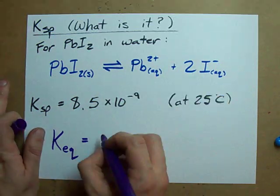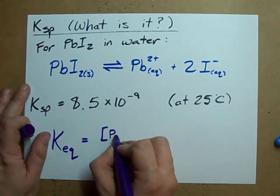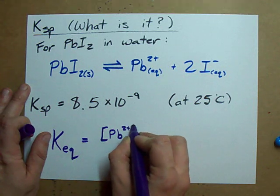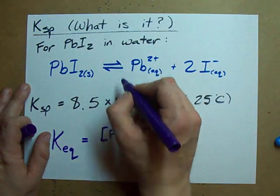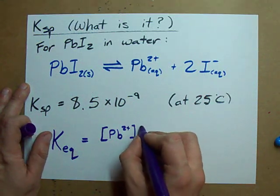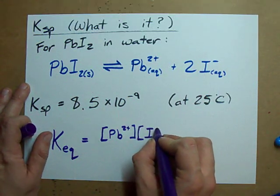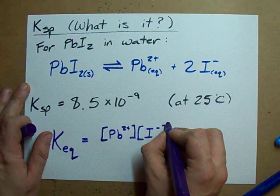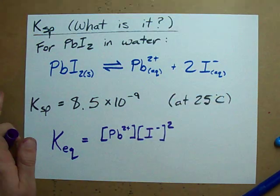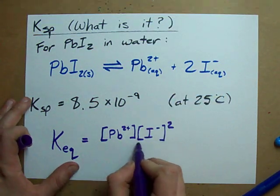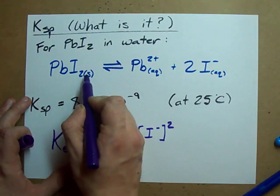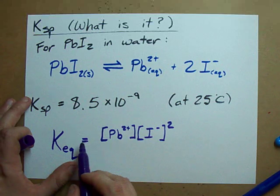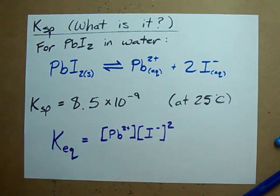So, products over reactants. [Pb²⁺] to the power of one, because there's no coefficient in front of that, times the concentration of I⁻ squared, because there's a two in front there. Divided by the concentration. Oh, no, we don't include this, because it's a solid. And solids are not included in the equilibrium expression.